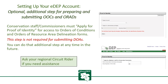Setting up your EDEP account — optional additional step for preparing and submitting Orders of Conditions and Orders of Resource Area Delineations. If you want to use EDEP to create ORADs and OOCs, you have to take one additional step. Conservation staff and commissioners must apply for proof of identity to access these forms. This step is not required for submitting Determinations of Applicability through the EDEP submittal platform. You can do that additional step at any time in the future. Ask your regional circuit rider if you need assistance.